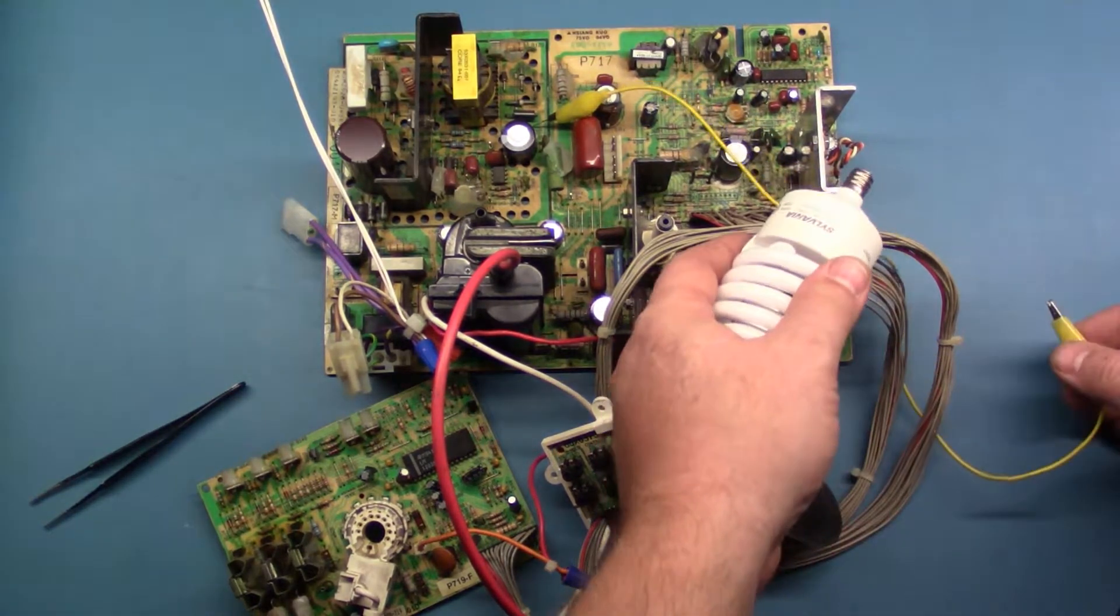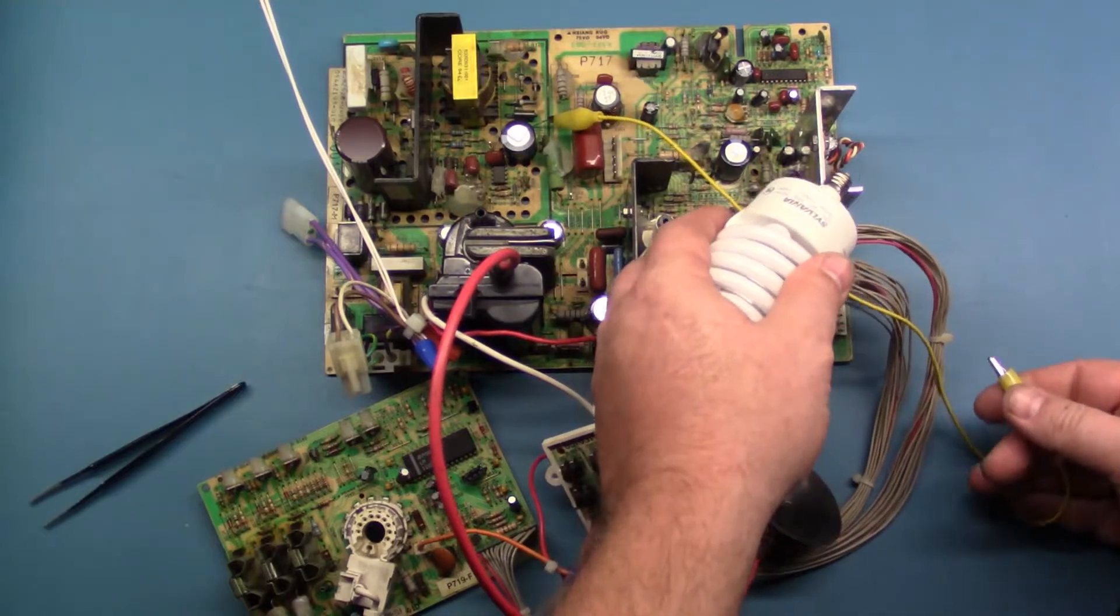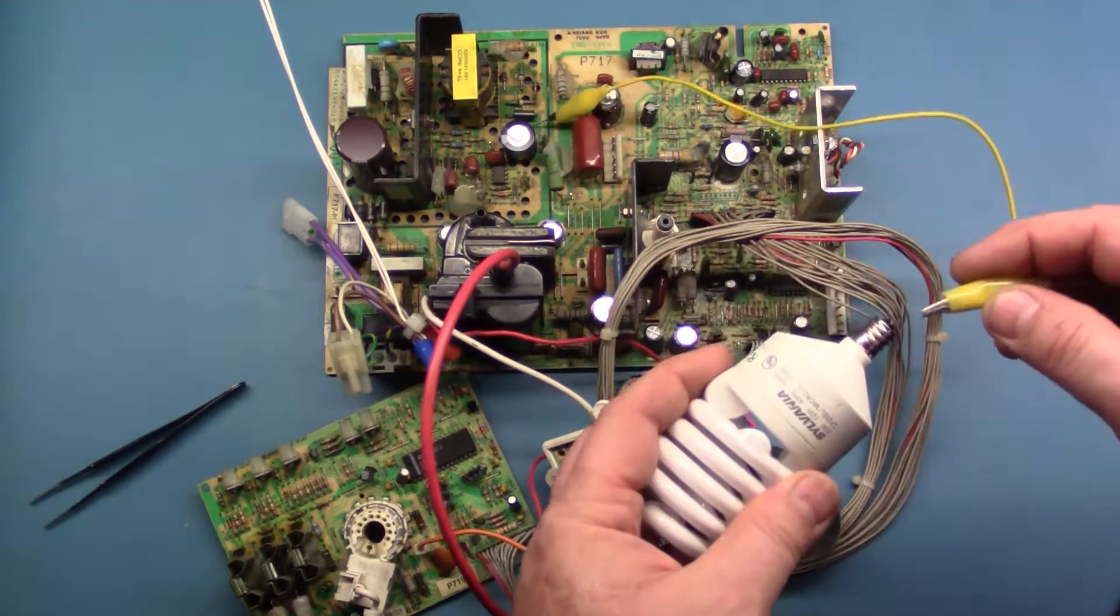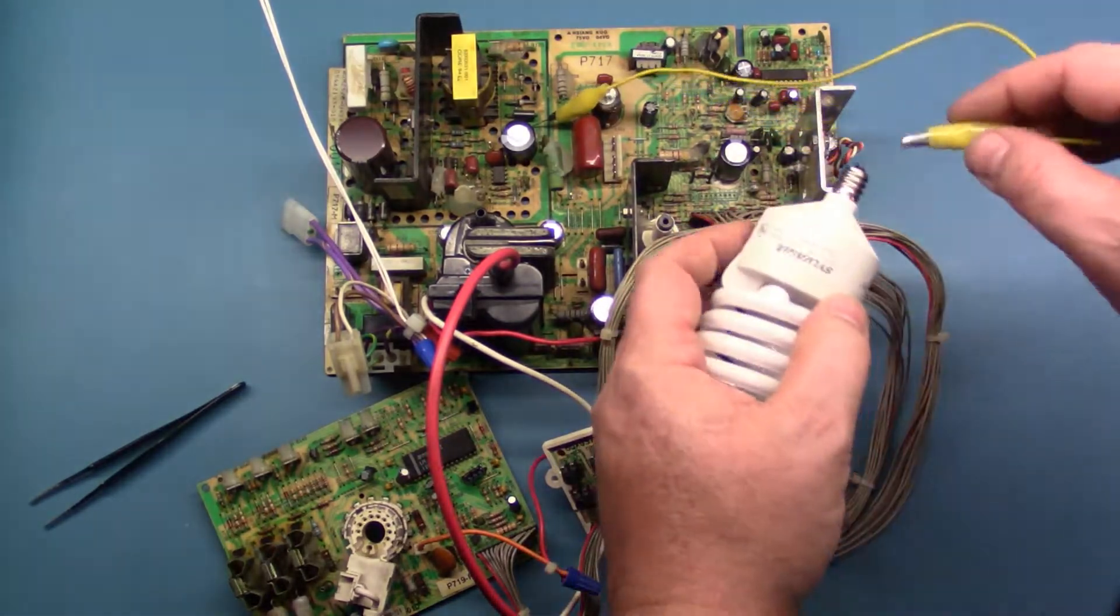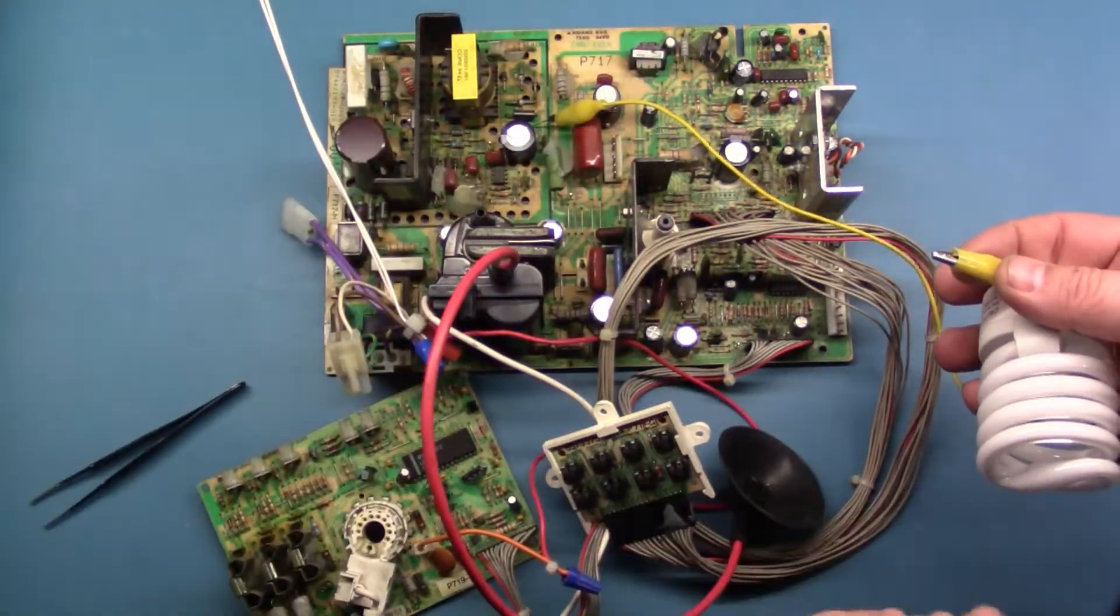You want to touch the negative side of the bulb to the heatsink frame and then touch your center and it should light up. If it lights up, your power supply section is good, you've ruled all that out and you can troubleshoot your horizontal section and other stuff.